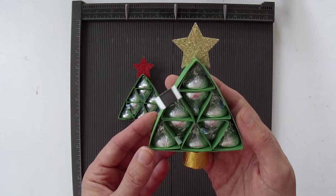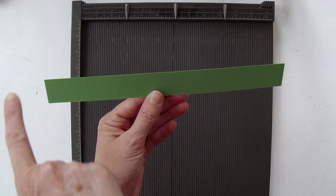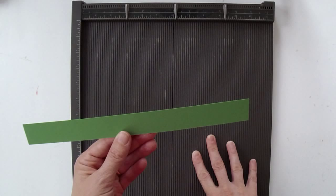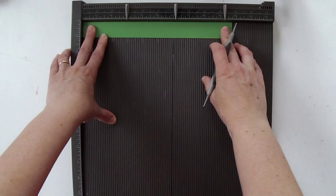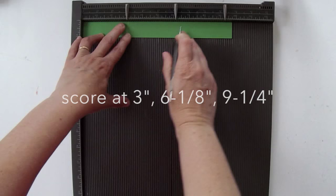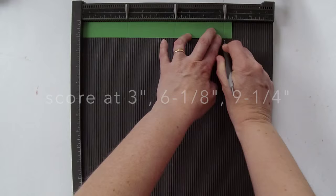To start off with you're going to need a strip of cardstock that is nine and three quarter inches by an inch and I have my Simply Scored scoring tool here and you're just going to put this right up at the top of your scoring board and we are going to score at the three inch mark, the six and one eighth inch mark, and the nine and a quarter inch mark.